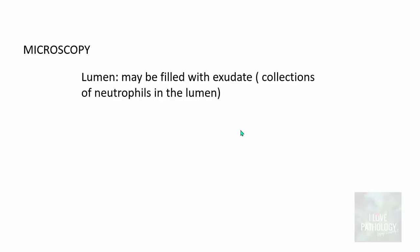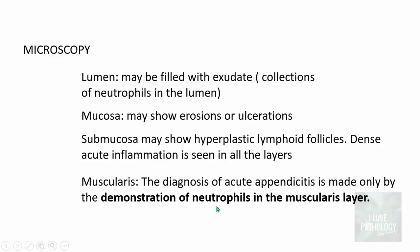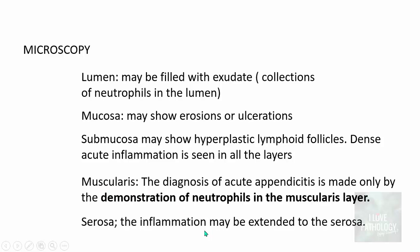Microscopically, the lumen may be filled with exudate, which is a collection of neutrophils. The mucosa may show erosion or ulceration. The submucosa may show hyperplastic lymphoid follicles if that is the cause of luminal obstruction. Dense acute inflammation is seen in all layers of the appendix. Most importantly, the demonstration of neutrophils in the muscularis propria is the histological diagnostic criterion for acute appendicitis. Serosa may show inflammation if it is severe, extending into the peri-appendiceal tissue.